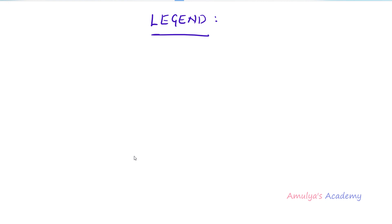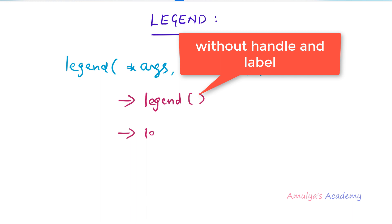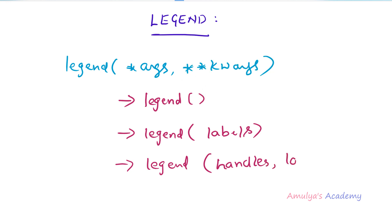To insert a legend to the plot, you can use the legend function of the pyplot module. The syntax is: matplotlib.pyplot.legend() with zero or more arguments or keyword arguments. We usually call this legend function in three different ways: first, without any argument; second, with labels; and third, with handles and labels. Let's discuss each one by one with examples.